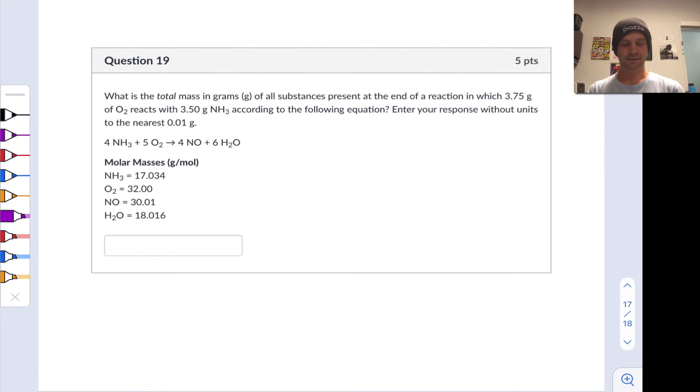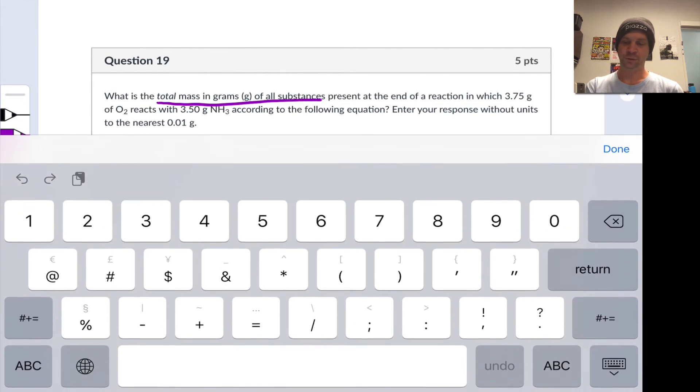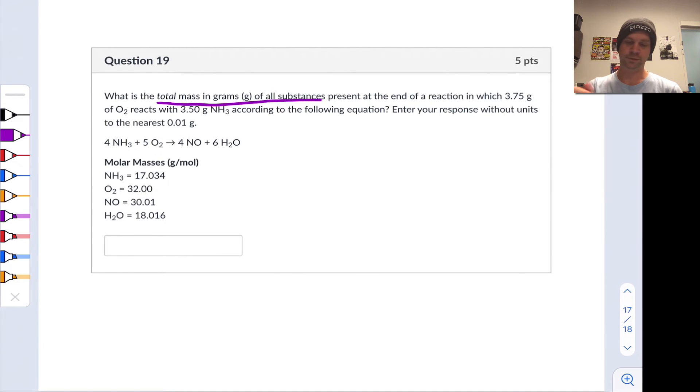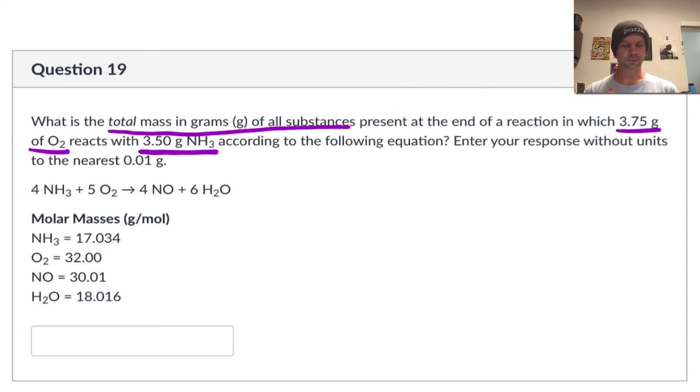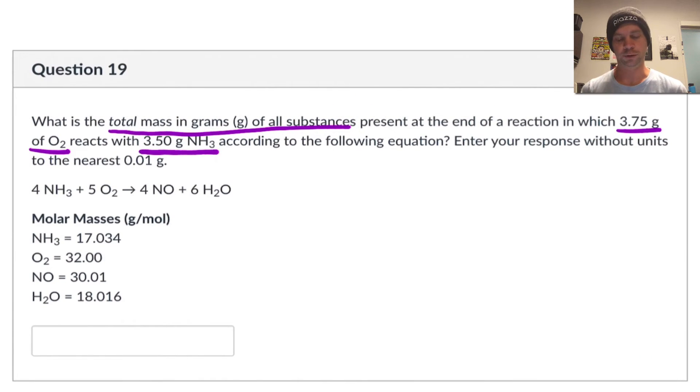In question 19, we're asked, what is the total mass of all substances present at the end of a reaction in which this mass of O2, 3.75 grams of O2, reacts with 3.5 grams of NH3 according to the following equation? It appears to be balanced, and we can verify that, or you can take my word for it, that this is a balanced chemical equation. Enter your response without units to the nearest 0.01 grams.